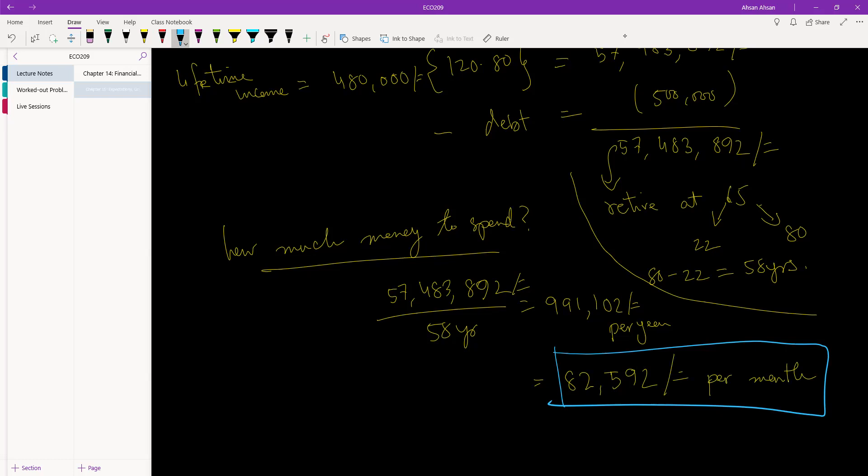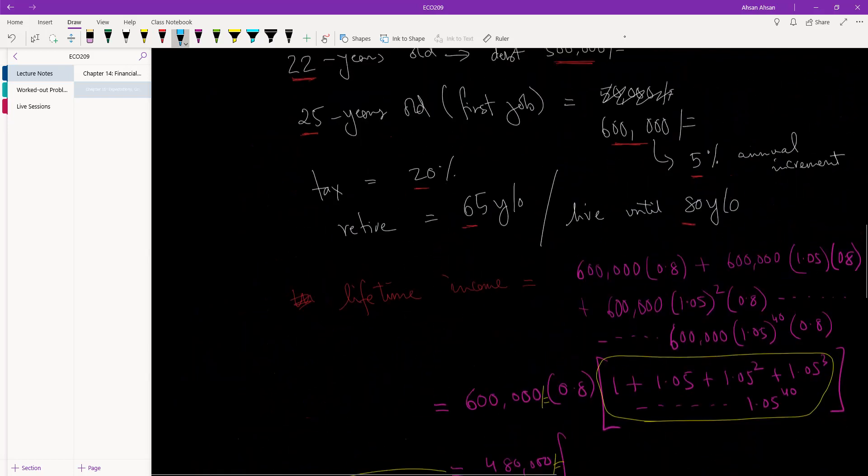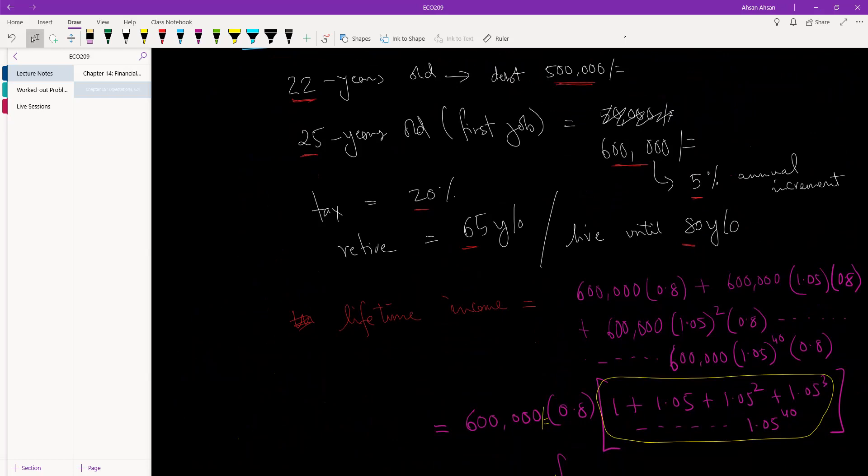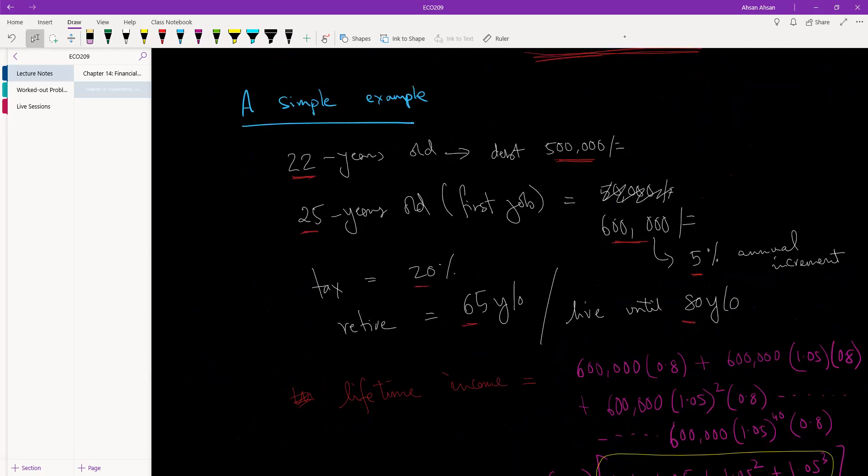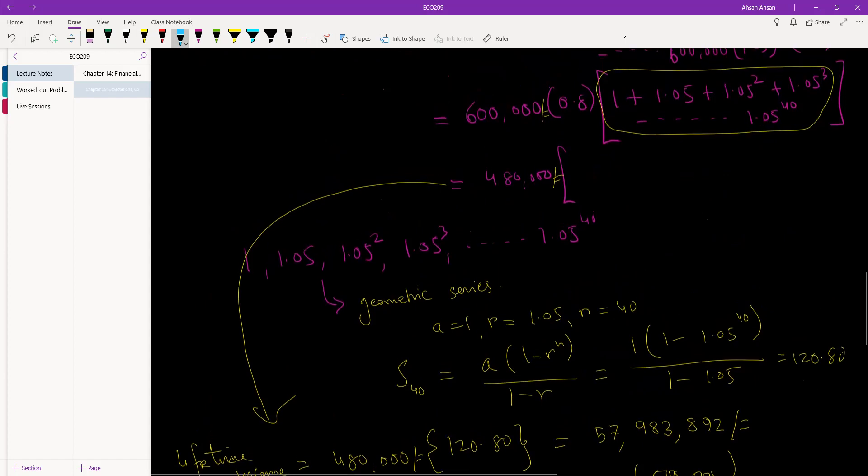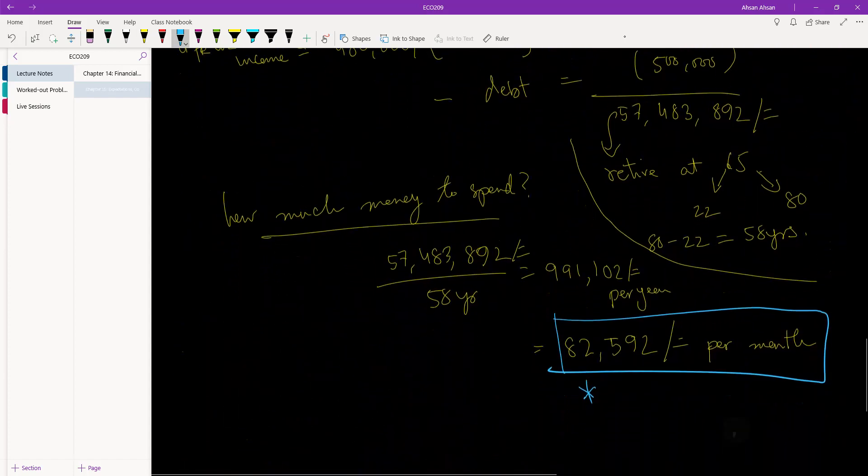So basically what we have done is we've projected how much money you could be expected to earn over your lifetime. Then we've projected how long we expect you to live. And we've just done a division. And we found out that you can afford to spend around 82,500 per month on average over your life. You should not be spending more than that. And if you want to spend less than that, you have more money for the rest of your life. So that's, you know, I mean, a lot of arithmetic. But at the end of the day, this is a very simple calculation, right?